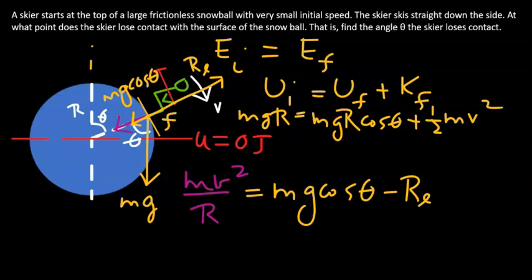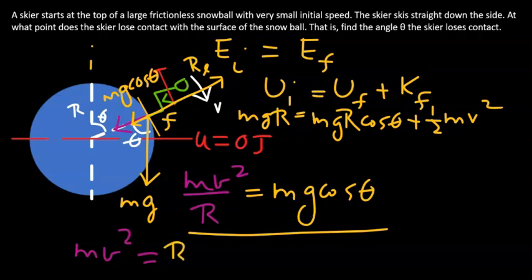However, at the point where the skier loses contact, there will be no reaction force. So at that point, m v squared over r is quite simply mg cosine theta. Or m v squared is quite simply r mg cosine theta. Why is this important? This is important so that we can use this equation to substitute for m v squared there.